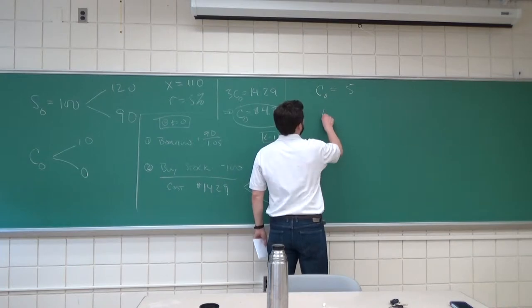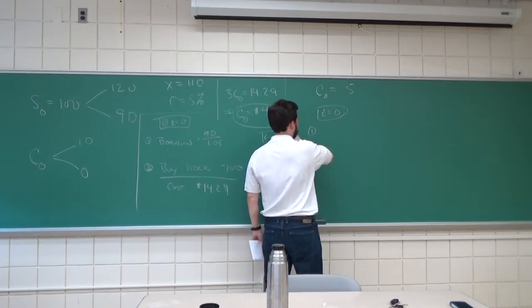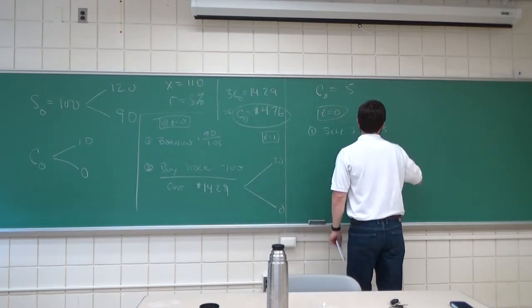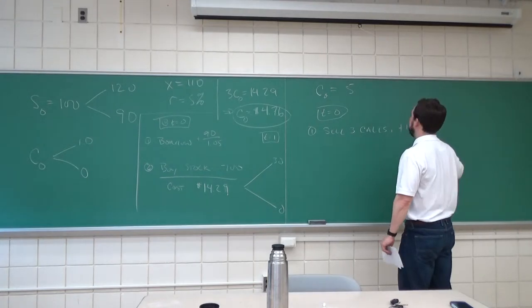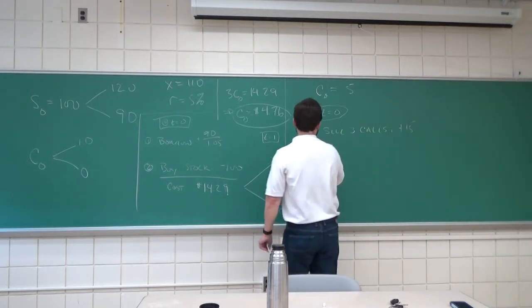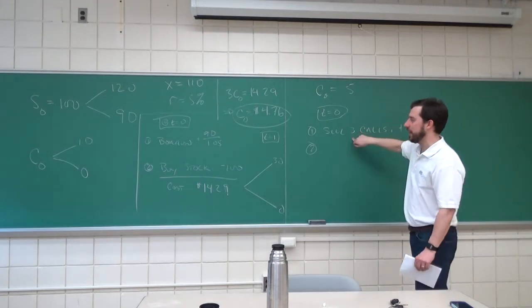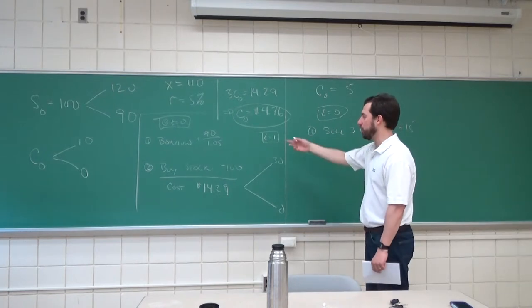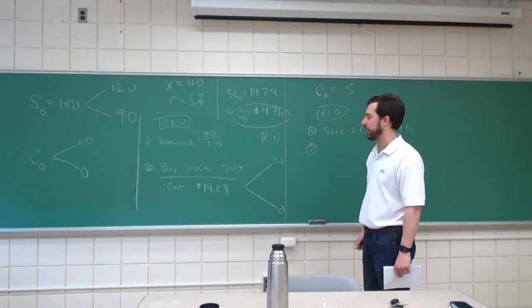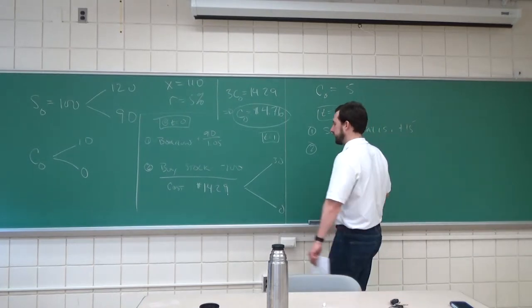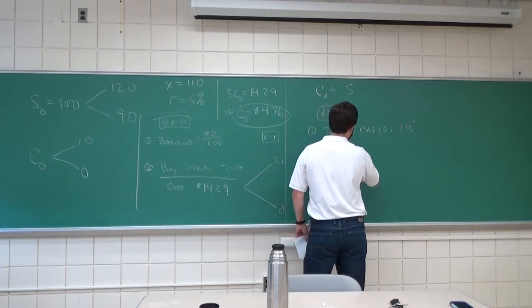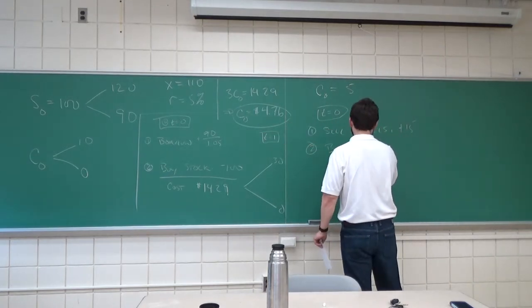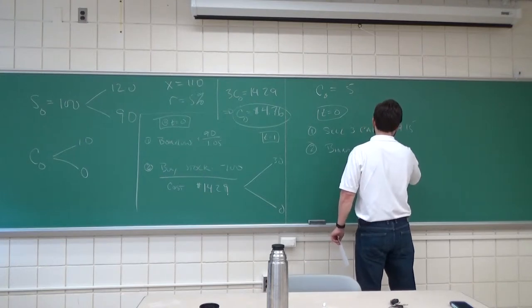The portfolio, so what we want to do at time zero. Step one, sell three calls. This is going to give us plus $15, five times three. Second step, we're sold three call options, now we have to follow exactly this. We borrow $90 at 5% and buy stock. Step two, borrow. Now, 90 divided by 1.05 is 85.71, so this is going to be a cash inflow of 85.71.